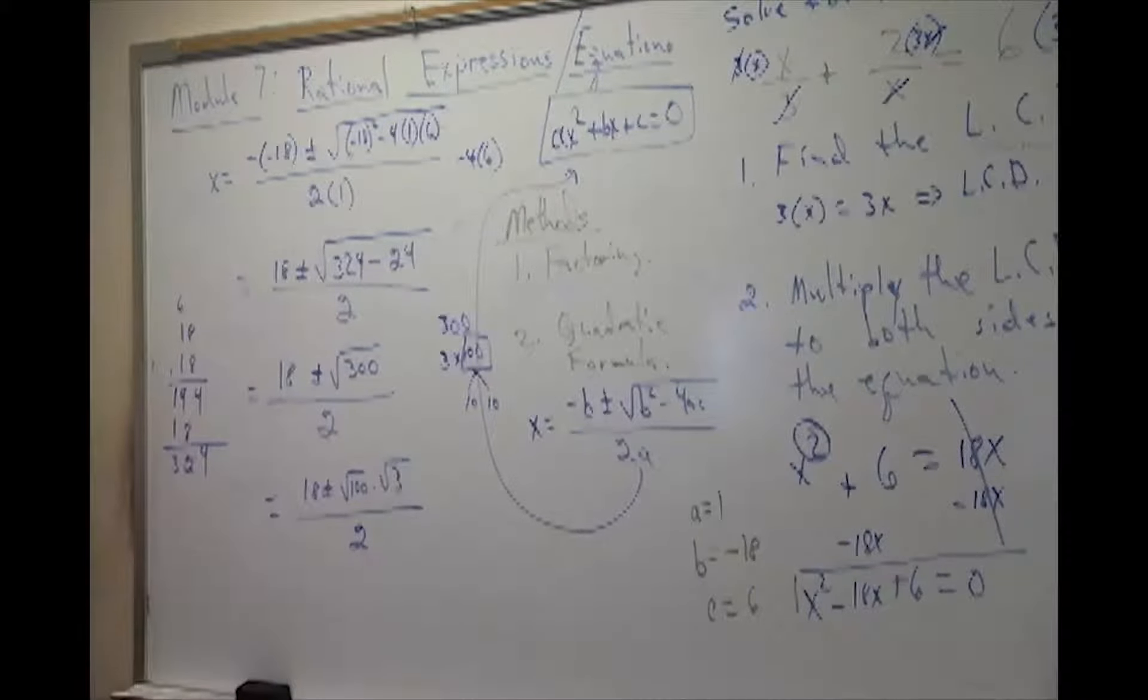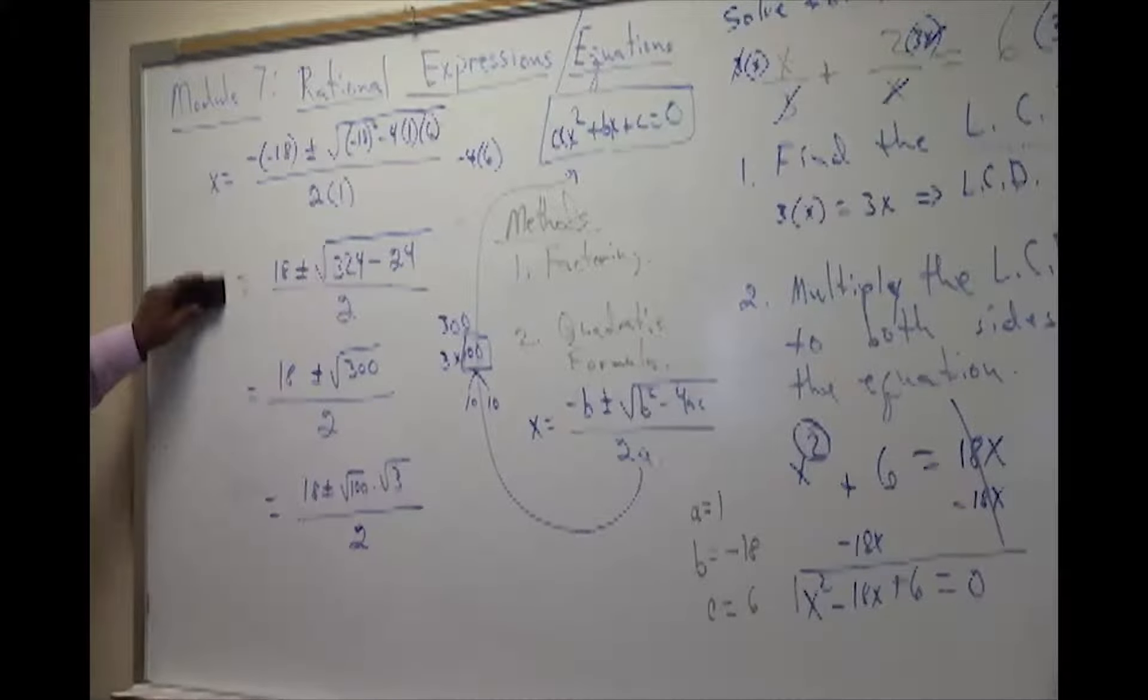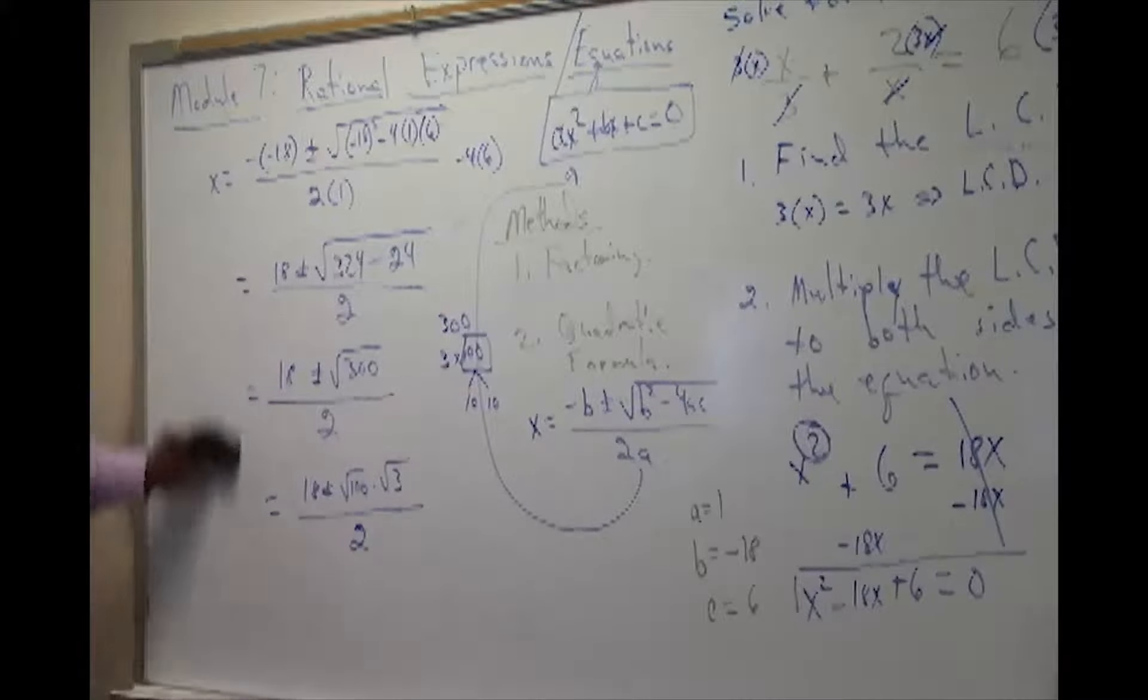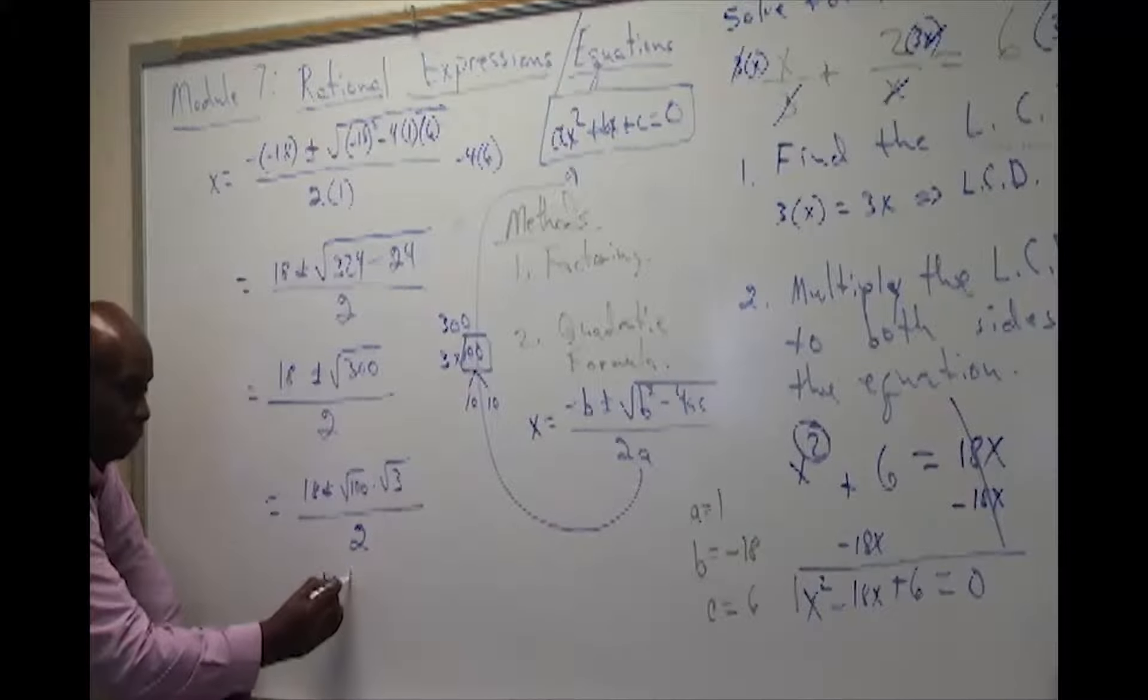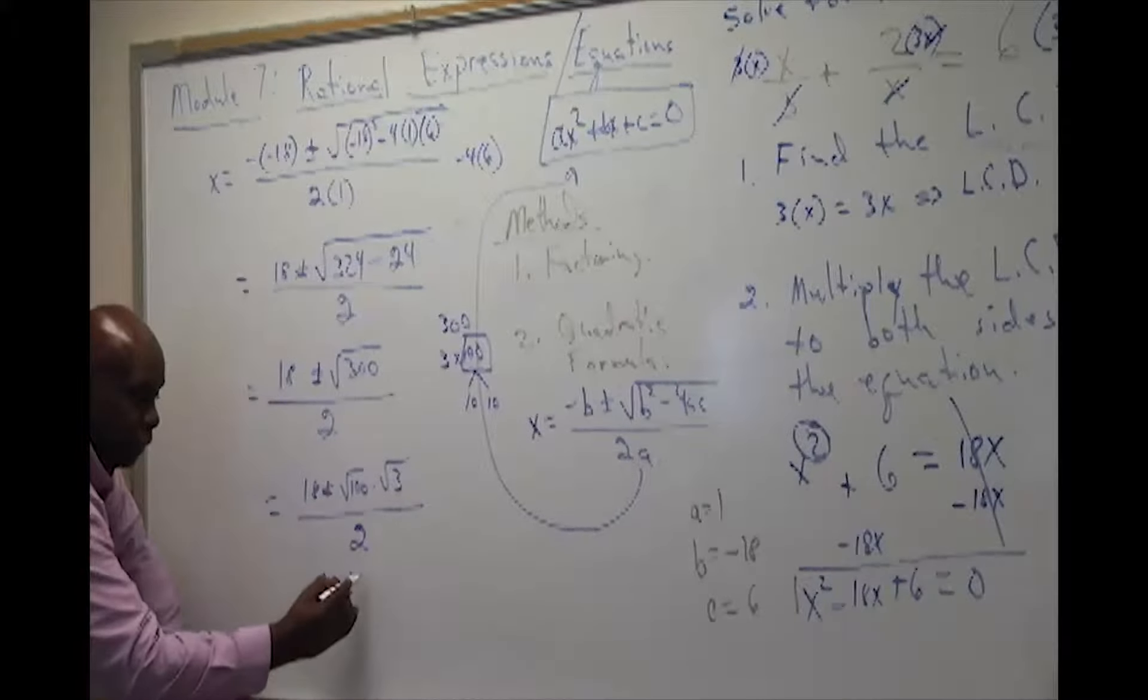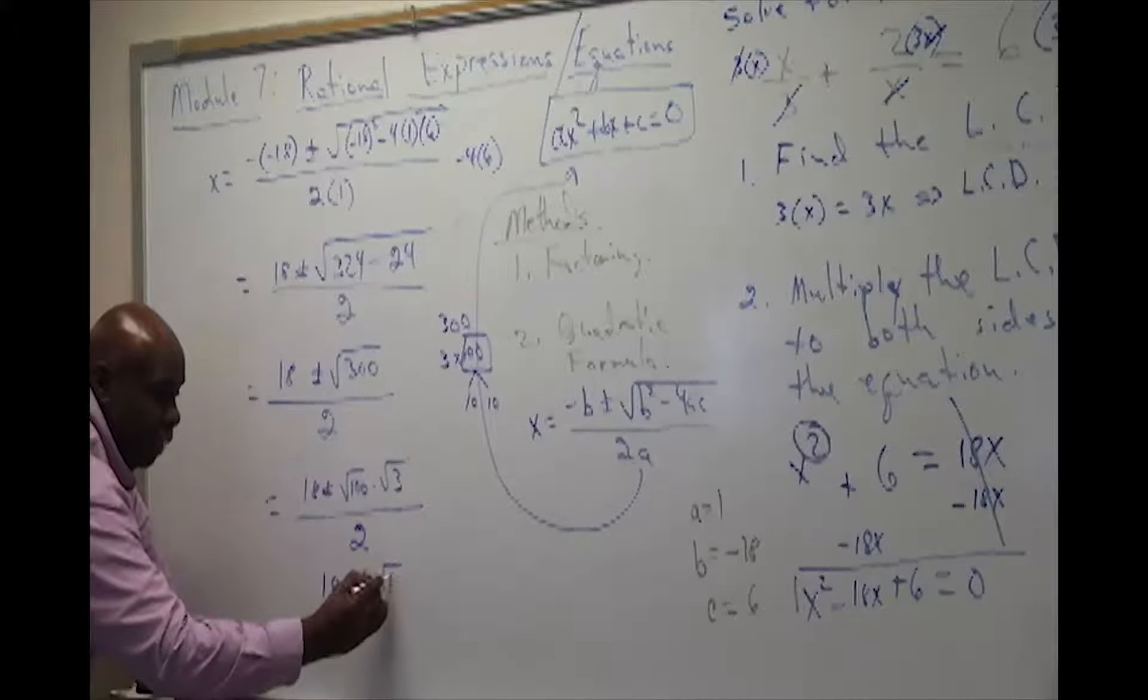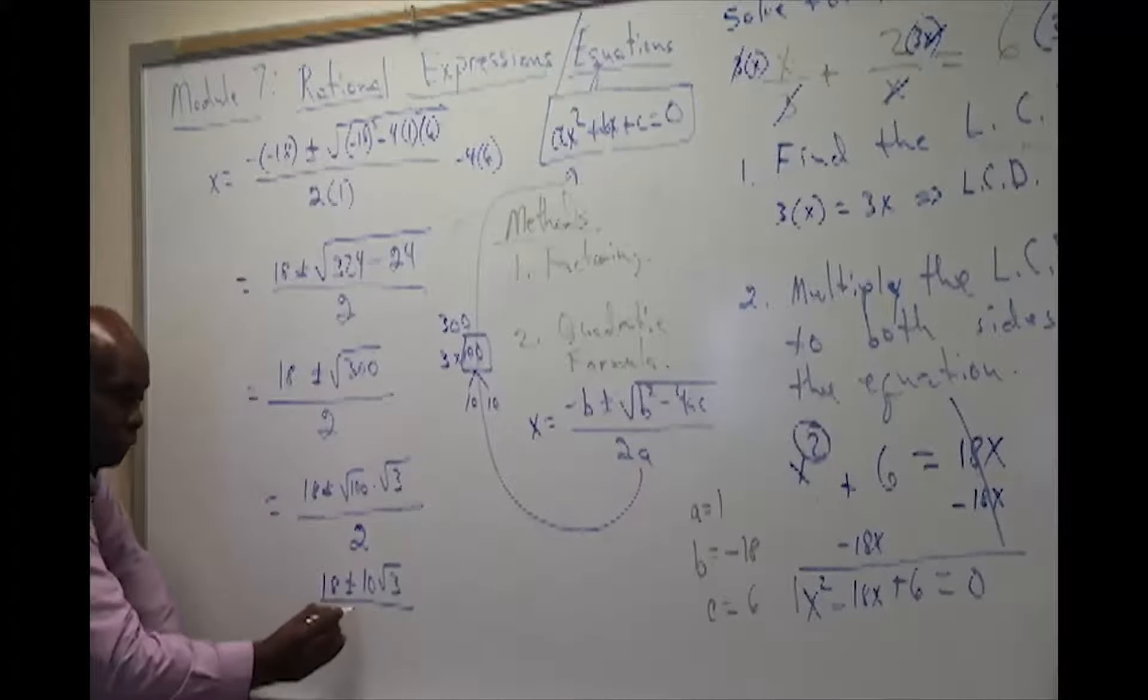Once again, what is the square root of 100? Well, we just explained to you that's the same thing as 10. So we have 18 plus or minus the square root of 100 is 10, and that's times the square root of 3, all over 2.